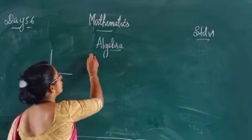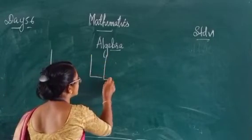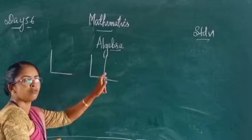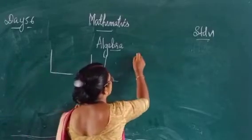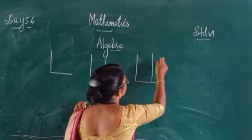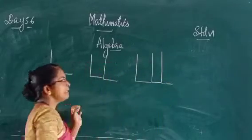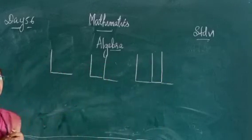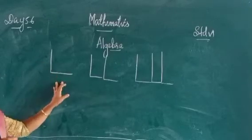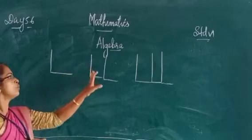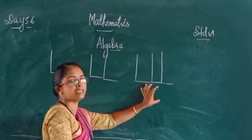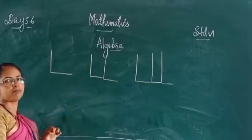To make 1 egg shape, how many matchsticks are needed? 2 matchsticks. To make 2 eggs, how many matchsticks? 4 matchsticks. In the case of 3 eggs, how many matchsticks are needed? 6. So: 1 egg = 2 matchsticks, 2 eggs = 4 matchsticks, 3 eggs = 6 matchsticks.